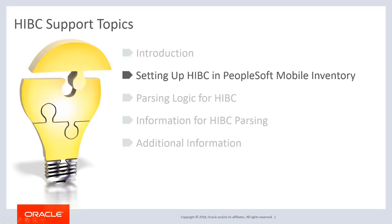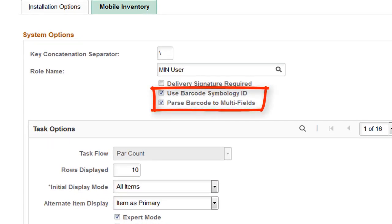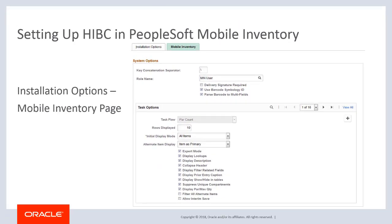The following page shots were taken using PeopleSoft Image 22. To perform barcode scanning within PeopleSoft Mobile Inventory, you need to set up Mobile Application Barcode Parsing on the Mobile Inventory Installation Options page. Select the Use Barcode Symbology ID and Parse Barcode to Multifields checkboxes. The HIBC barcode can contain multiple data elements, so when you select the Parse Barcode to Multifields checkbox, the system parses the data into separate data fields.